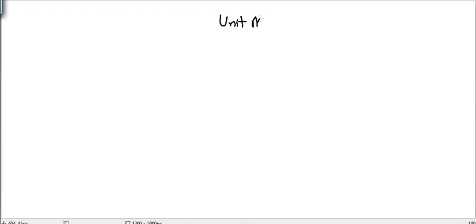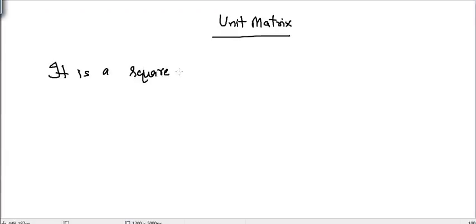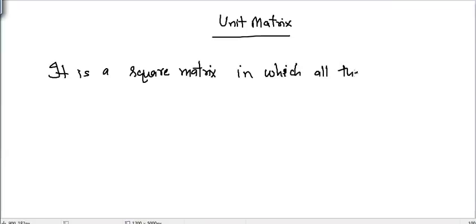In this video we will learn about unit matrices. By definition, a unit matrix is a type of square matrix — a matrix having equal number of rows and columns — in which all the elements are equal to zero except the elements present on the main diagonal.